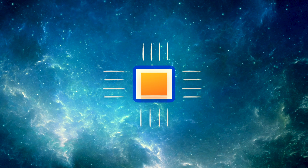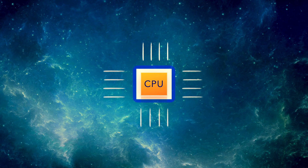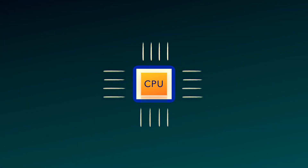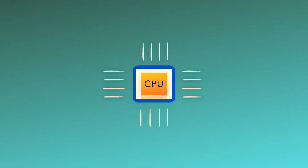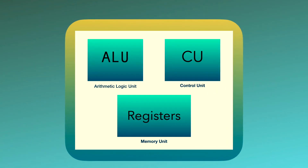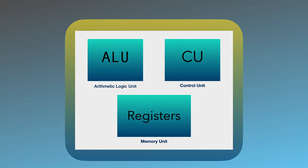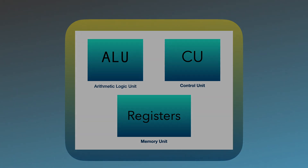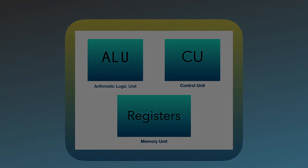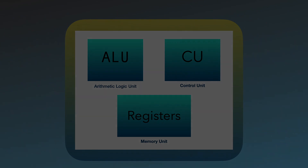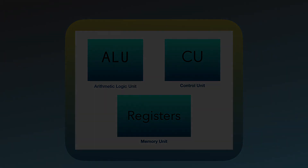The brain of a computer system is the CPU. It is a combination of a few specialized units such as ALU for arithmetic and logical operations, CU which is the control unit for orchestrating data processing, and registers to hold data and sometimes instructions.